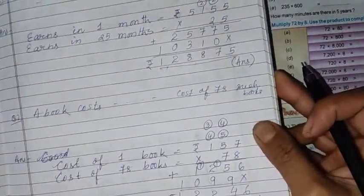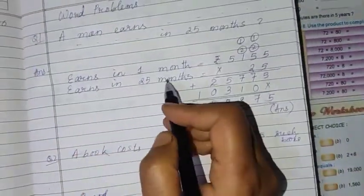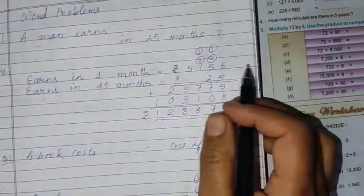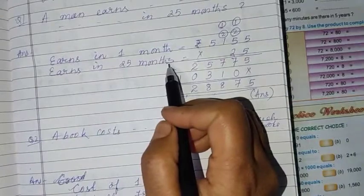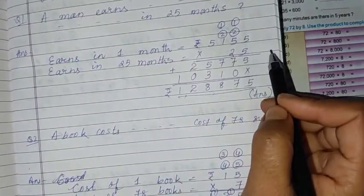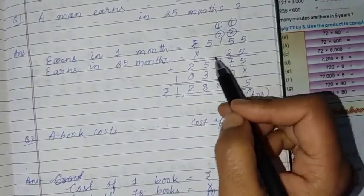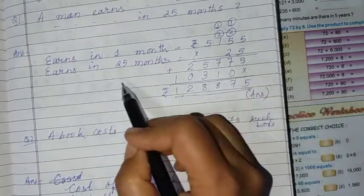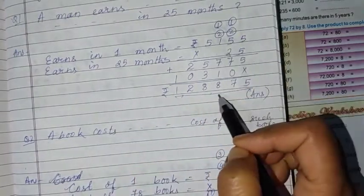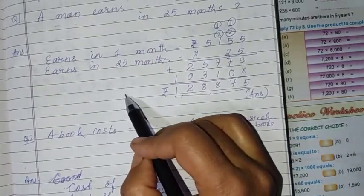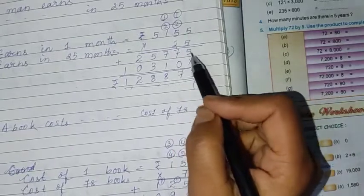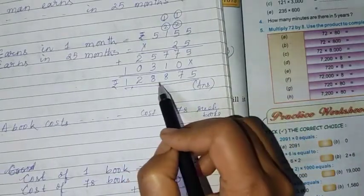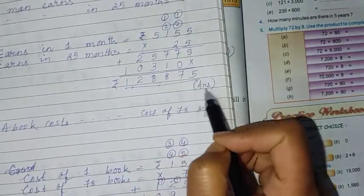So how to write: earns in 1 month, or earning in 1 month, you can write, or earns in 1 month 5,155 rupees. And he earns in 25 months is equal to multiply by 25. If you have enough space, then you can do multiplication here. Otherwise do down. If you are not getting enough space to do multiplication, you can do it here also. Then after that you can write answer. And after multiplication by 25 you will get 1,28,875. This is the answer.